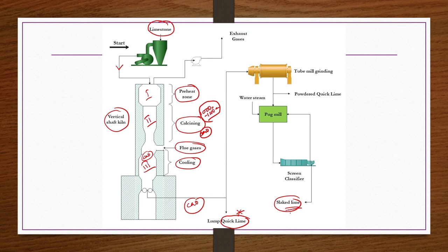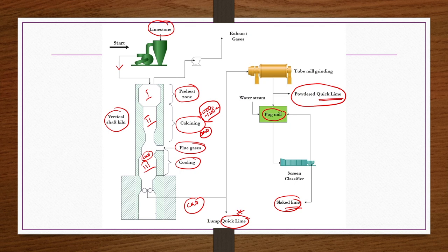If you want hydrated or slaked lime, this quick lime is passed through tube mill grinding where crushing of the lumps takes place. Very fine particles of quick lime which cannot be sent to subsequent operations are collected as powdered quick lime. The remaining material is sent to a pug mill in which water or steam is also provided so that required hydration can take place. This mixture is sent to a screen classifier. Whatever materials have sufficient size, around 2 mm or 2 cm, are taken as slaked lime, whereas other size material is sent back to the pug mill for subsequent hydration.